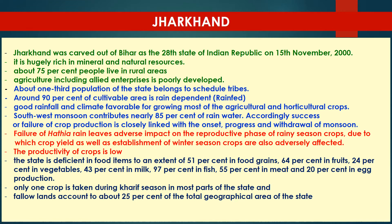The state is deficient in food items to an extent of 51% in food grains, 64% shortfall in fruits, 24% in vegetables, 43% in milk, 91% in fish, 55% in meat, and around 20% in egg production. Only one crop is taken during the rainy season in most parts of the state, and fallow lands account for about 25% of the total geographical area.